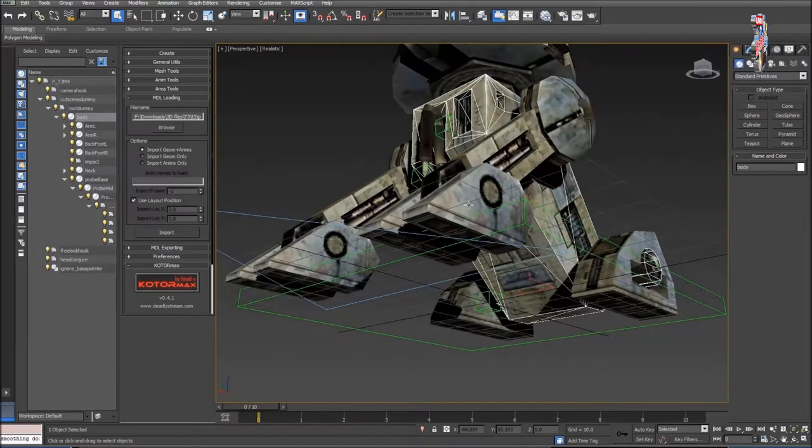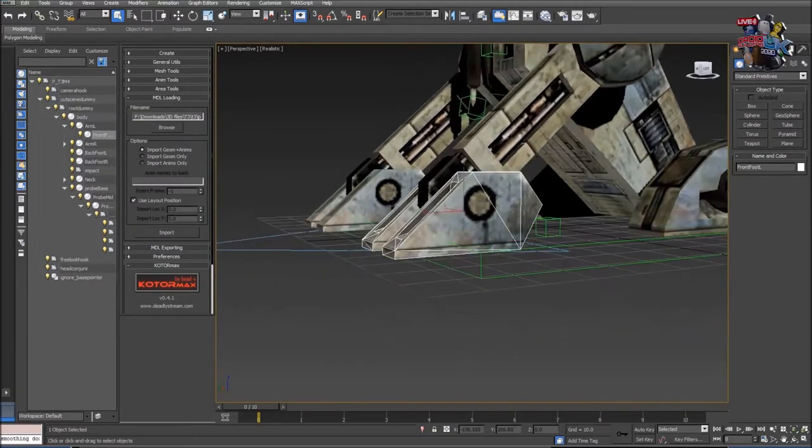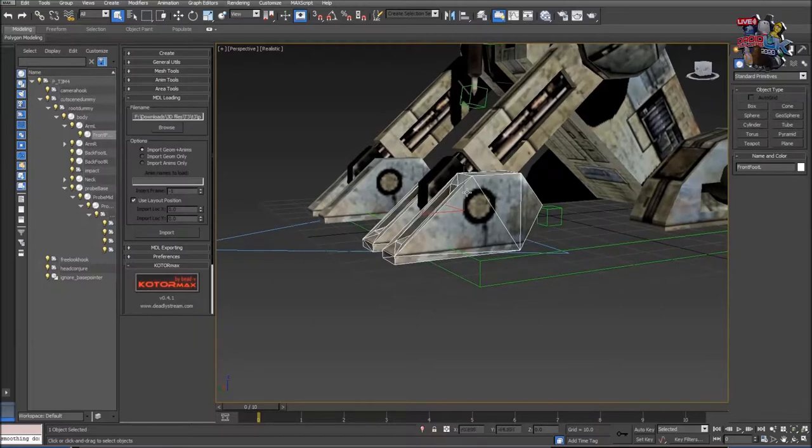Likewise if I go to the side of a foot you can see there's three polygons or four polygons at the sides of a foot. There's nothing to suggest a round object in the middle.